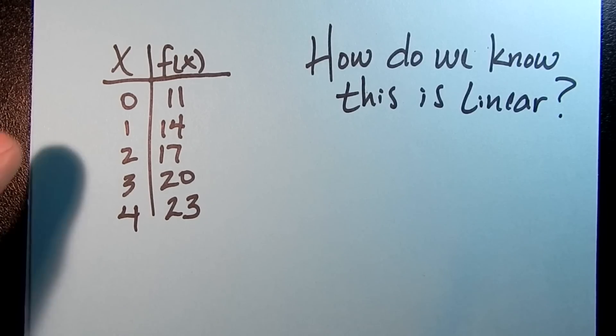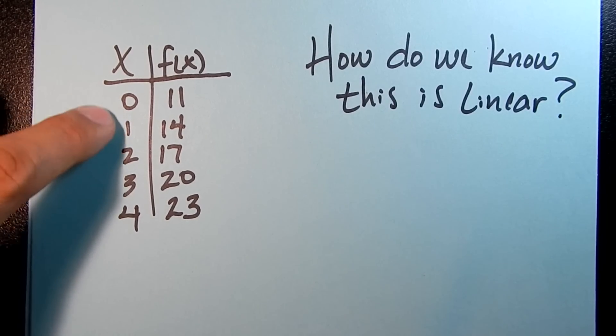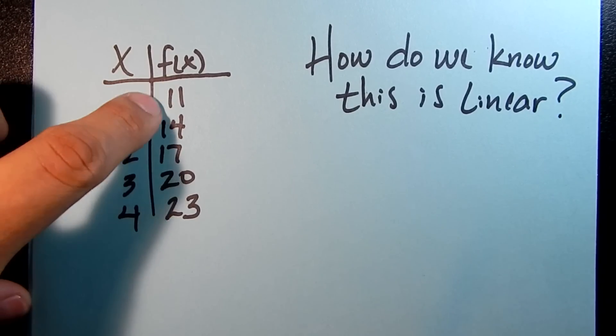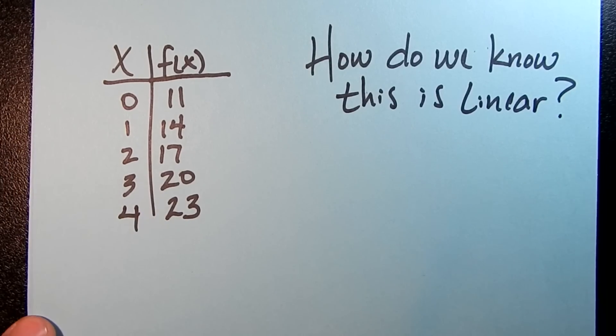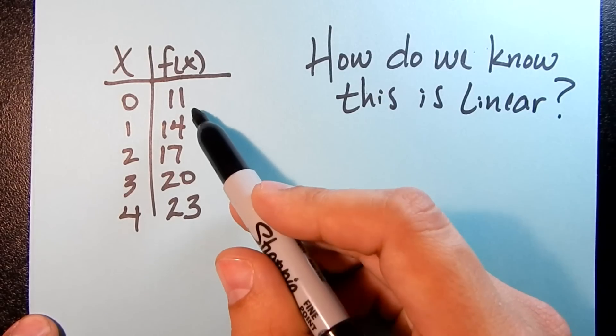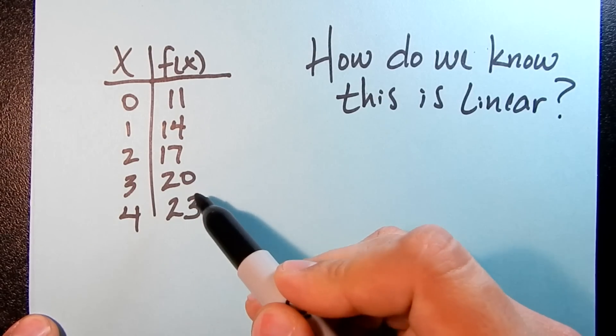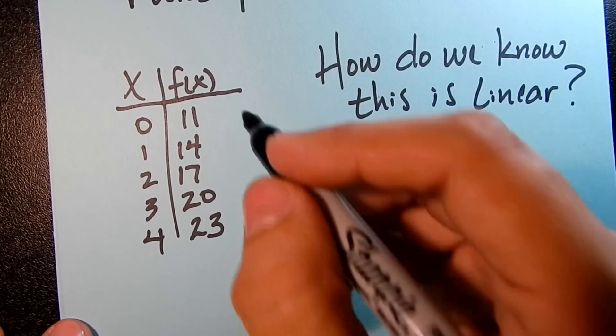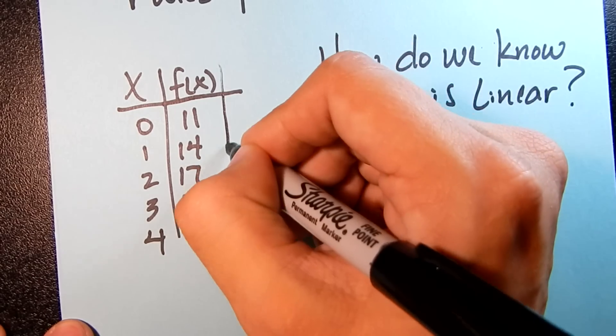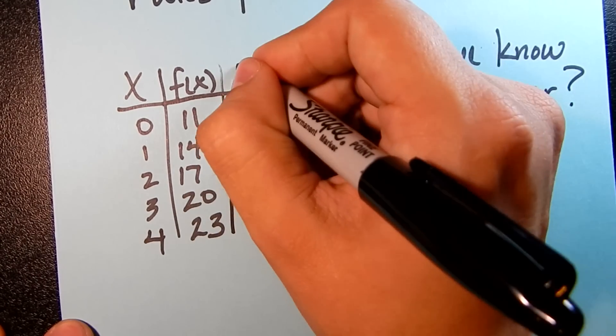So in this case, x is going to be our inputs. We have f(x). These are our outputs, and we have to kind of look at what is happening with each of these outputs. One quick and easy way to do this is to add another column to our table.